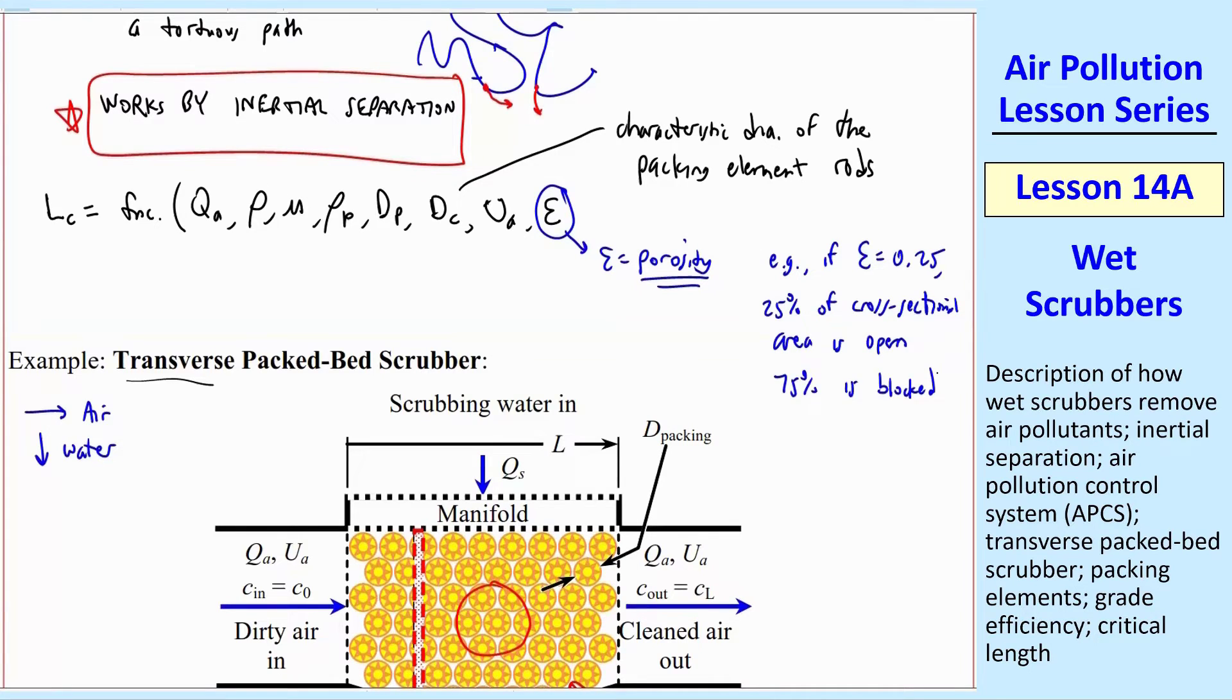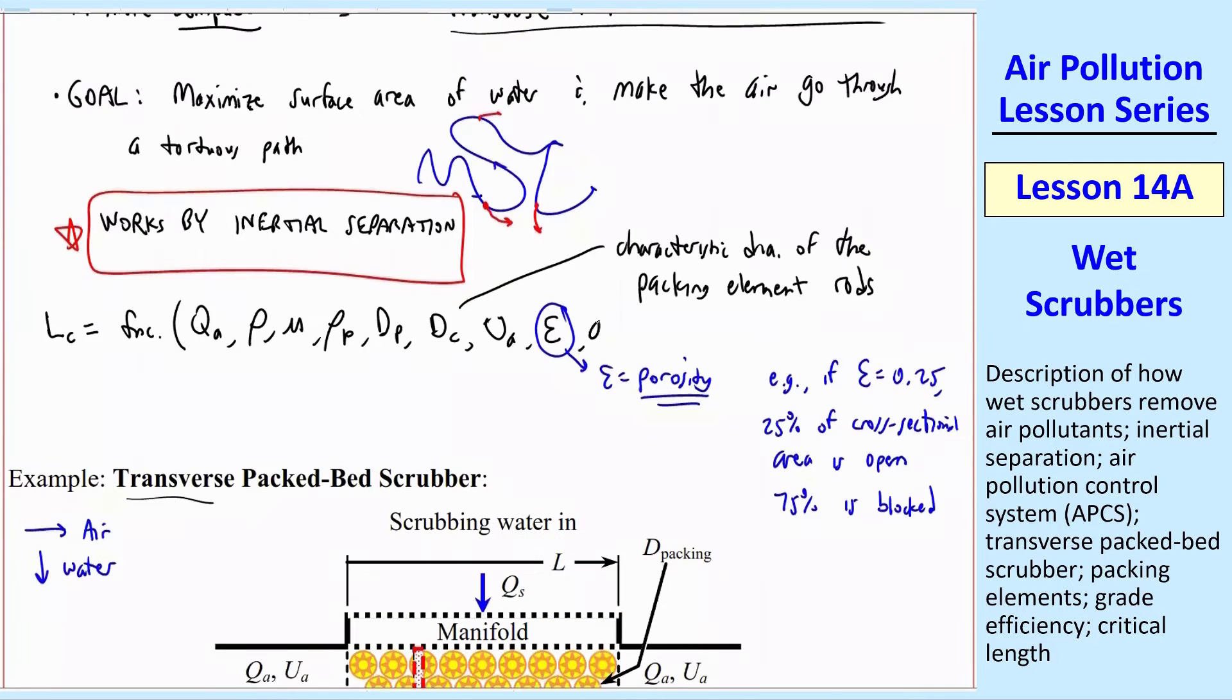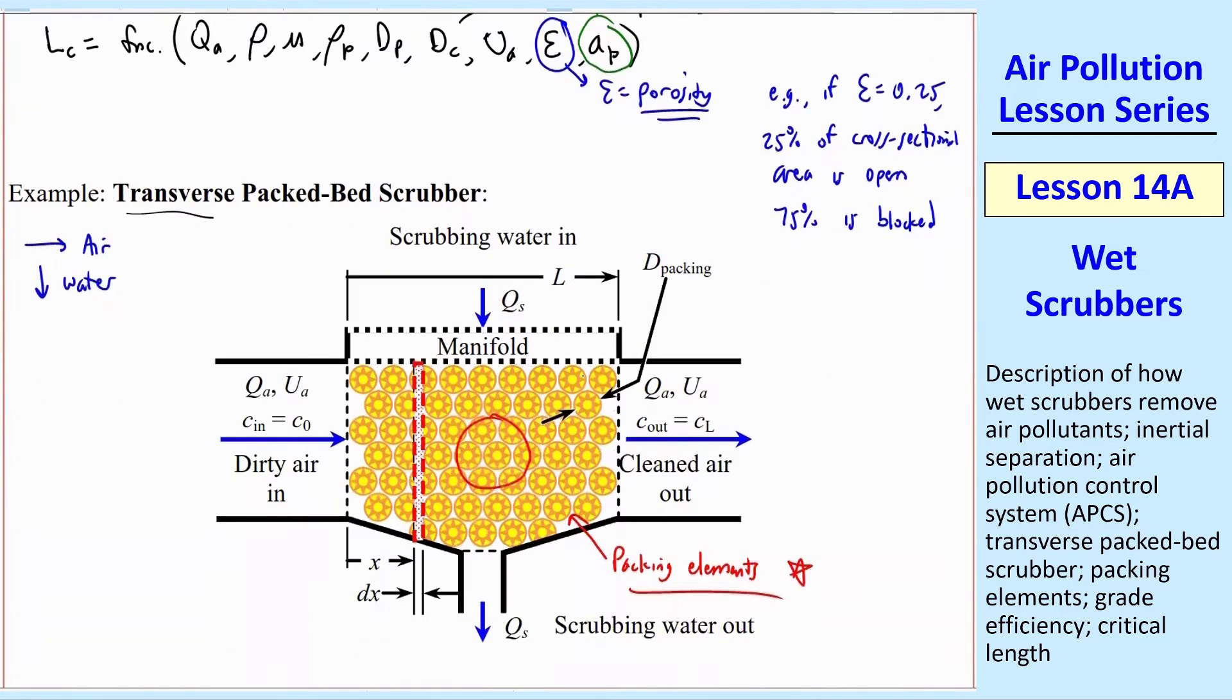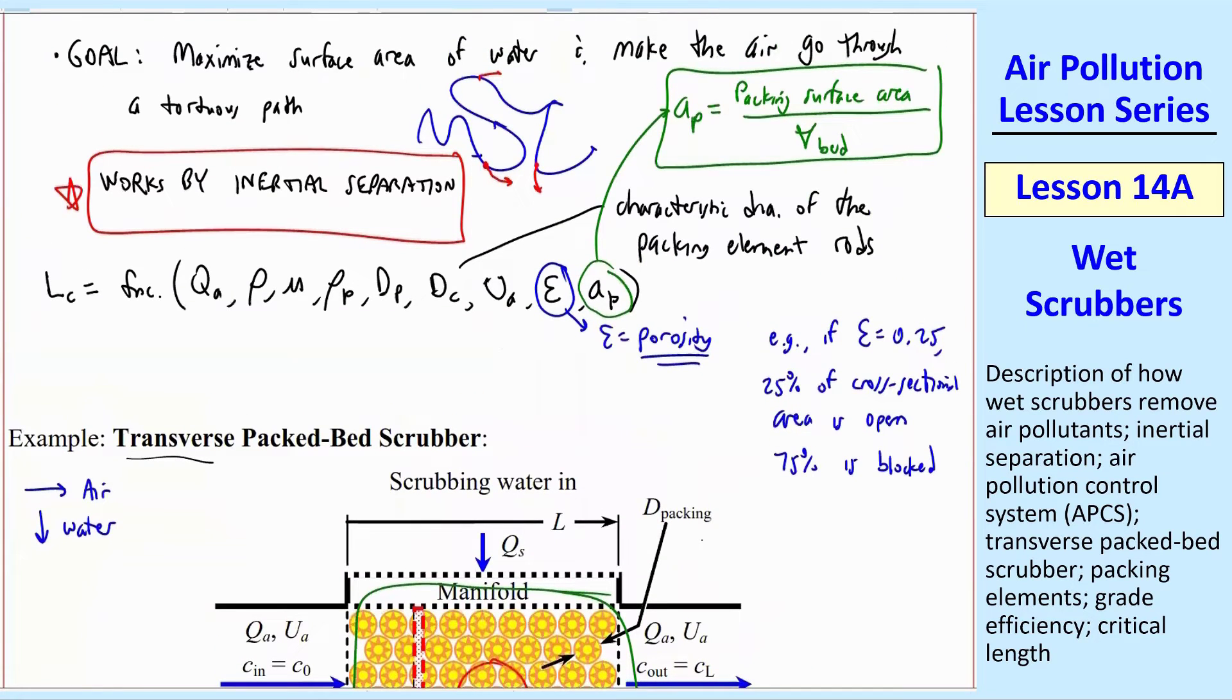And then finally, there's a parameter AP. AP is a characteristic parameter for these packing beds. AP is defined as the packing surface area over the volume of the bed. So the volume of the bed is this entire volume. And this is where I said the surface area is very critical.